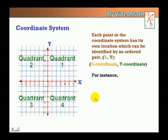Each point in the coordinate system has its own location, which can be identified by an ordered pair. The first value in the ordered pair is called the x-coordinate. The second number is called the y-coordinate.